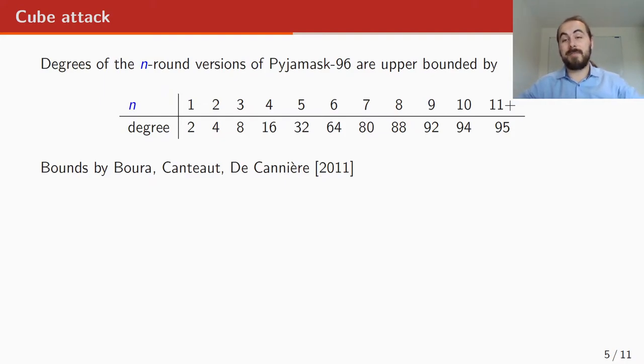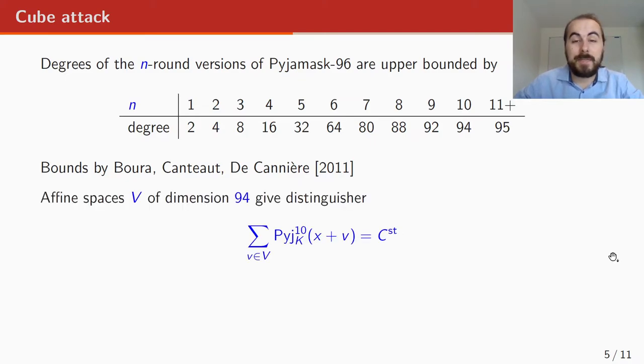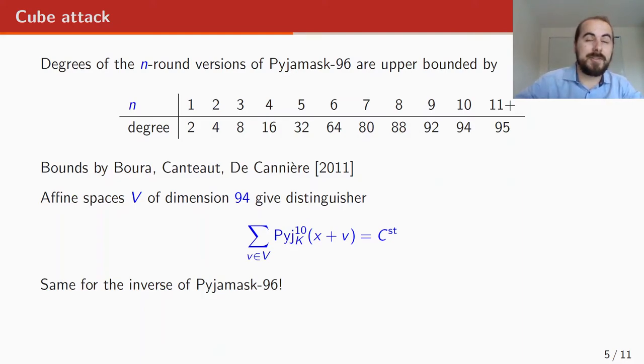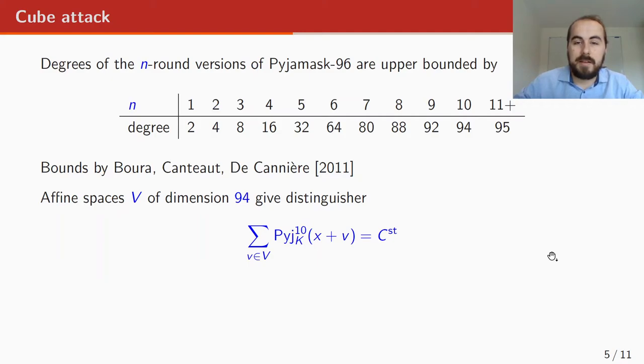So what we see here is that if we take a vector space or an affine space of dimension 94, then 10 rounds of PYJAMASK will give constant values. The inverse of PYJAMASK has the same property, and that's because the degrees of 10 rounds of PYJAMASK in the forward direction or 10 rounds of PYJAMASK in the backward direction are the same, because the only thing where it matters is in the non-linear layers, and that's only the SubBytes layer. And as I mentioned before, the S-box has degree two, but the inverse of the S-box also has degree two.